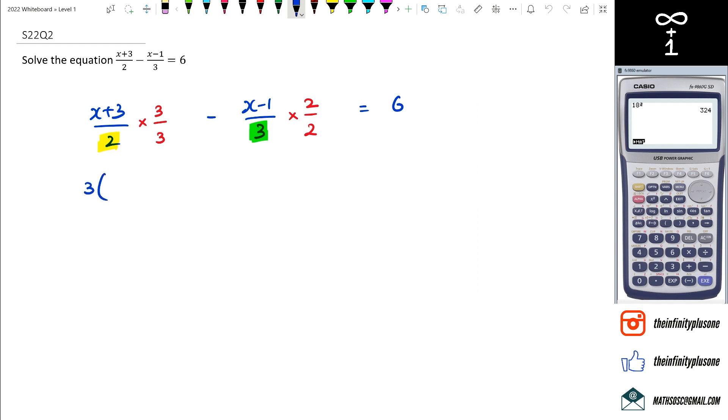So when I do this, I actually end up with 3 bracket X plus 3 over 2 times 3 which is 6, minus 2 times X minus 1 over 3 times 2 which equals to 6.